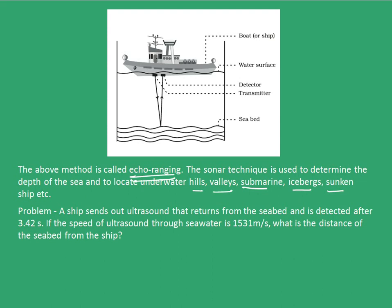Here's the picture which shows how sonar works. This method is called echo-ranging. A transmitter and a detector are placed near the bottom of the ship. The transmitter emits ultrasound, which travels all the way down to the sea bed and gets reflected from it. After reflection, this is again detected by the detector. Depending upon the time taken by the ultrasound to come back, the depth of the sea is measured.